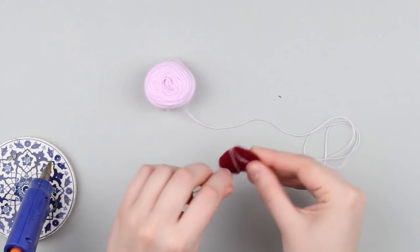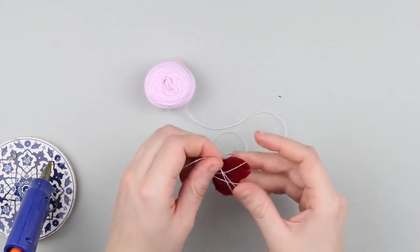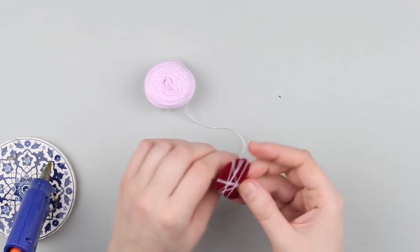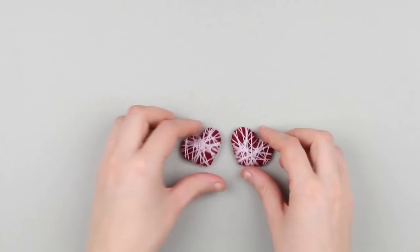Take pink yarn and continue wrapping in different directions to cover the cardboard. Make another heart in the same way.